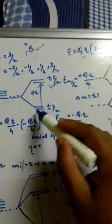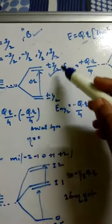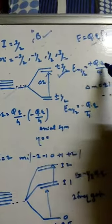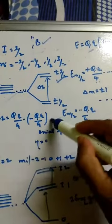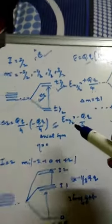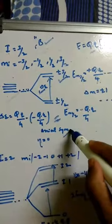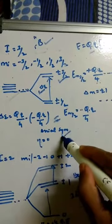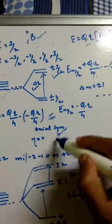The ΔE value is calculated as: eQq/4 minus (−eQq/4), which gives the transition energy equal to hν. This splitting occurs under axial symmetry, where Qxx = Qyy ≠ Qzz, and this happens when η = 0.